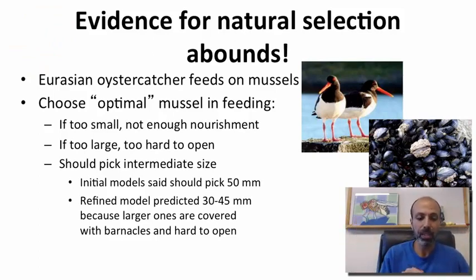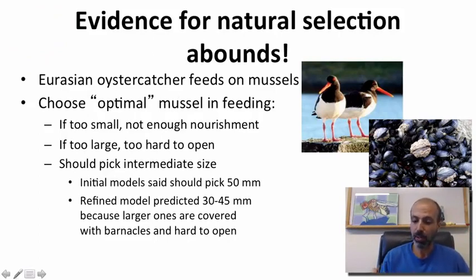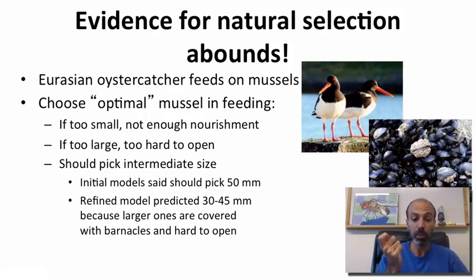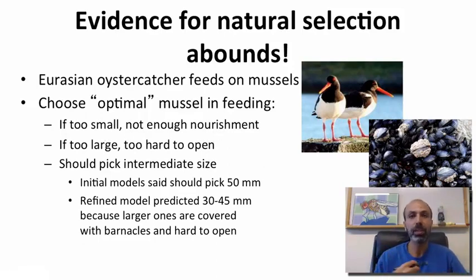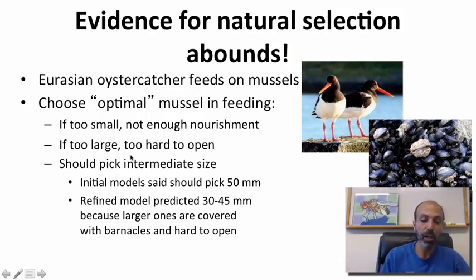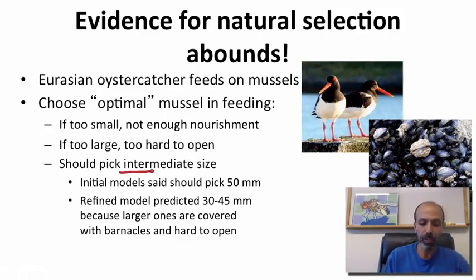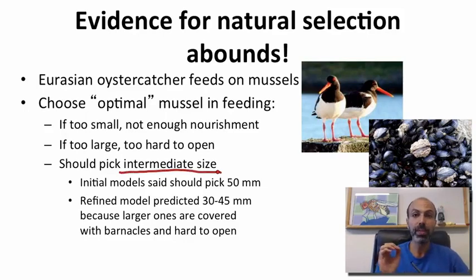Let's look at the example of the Eurasian oyster catcher. This species feeds on mussels — the small clam-like mussels. There's an optimal size of mussel for this bird to pursue. If a mussel is too small, they won't get enough nourishment — it's not worth spending the energy to open something that gives almost no energy. If it's too large, it becomes extremely hard to open, and they may expend tons of energy and never get any nutrients out of it.